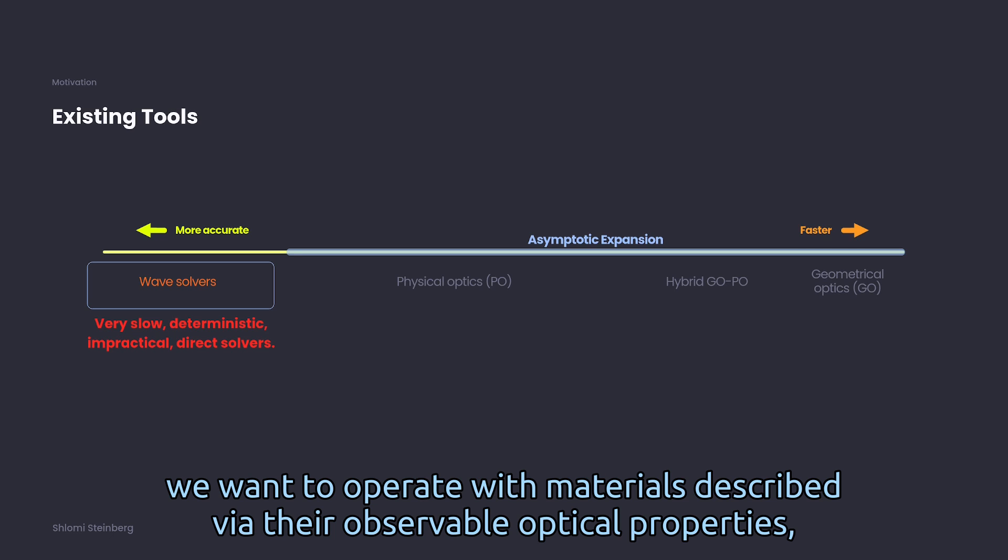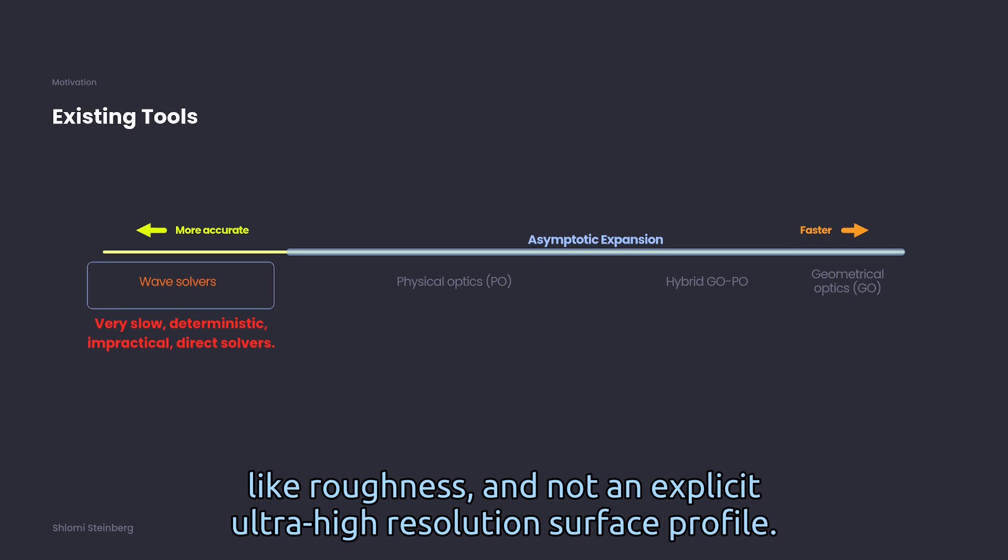We want to operate with materials described via their observable optical properties, like roughness, and not an explicit ultra-high-resolution surface profile.